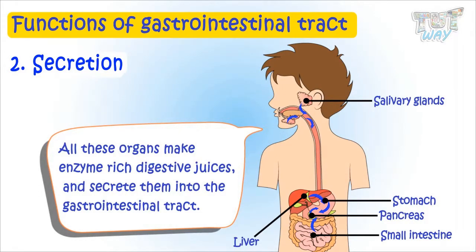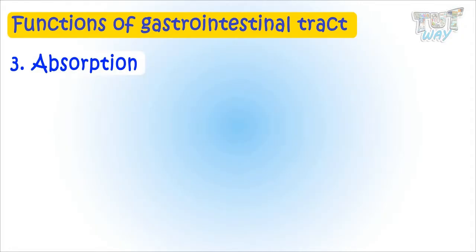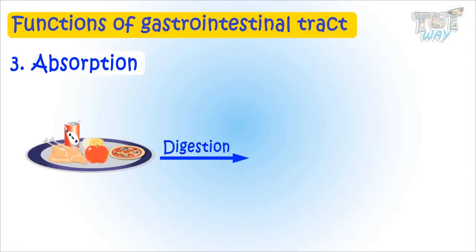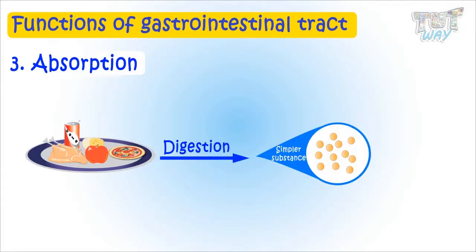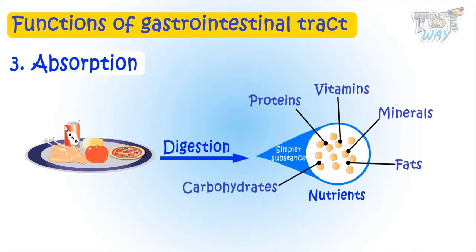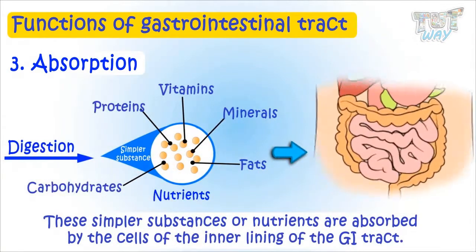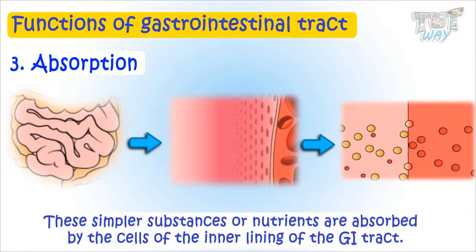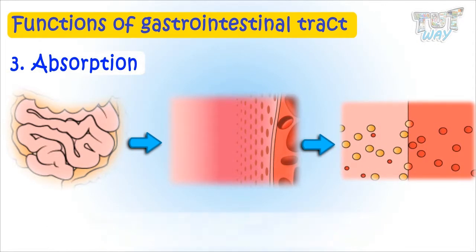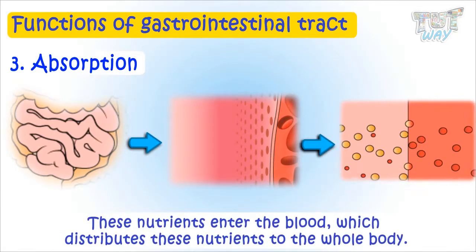Another important function of our digestive system is absorption. Food particles that are broken down into simpler substances are called nutrients. They can be proteins, vitamins, minerals, fats, or carbohydrates. These simpler substances or nutrients are absorbed by the cells of the inner lining of the GI tract. These nutrients then enter the blood, which distributes them to the whole body — to each and every cell — for its working. This process is called absorption.